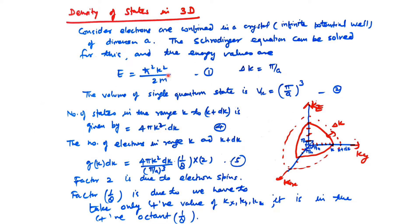For density of state in 3D, we consider electrons confined in a crystal. The crystal is a finite potential well of dimension A, and the Schrödinger wave equation can be solved for this. The energy values are given as E = ℏ²K²/2m. If we take a small distance delta K as π/A, then the volume of a single quantum state is (π/A)³.